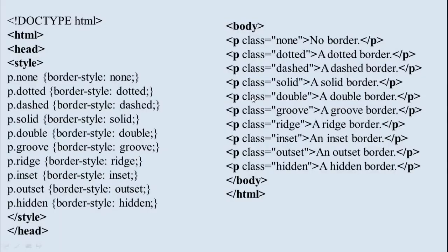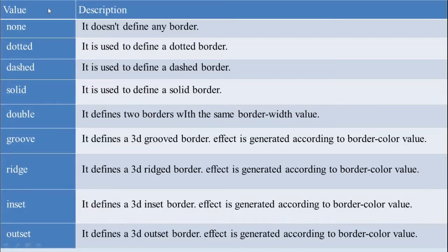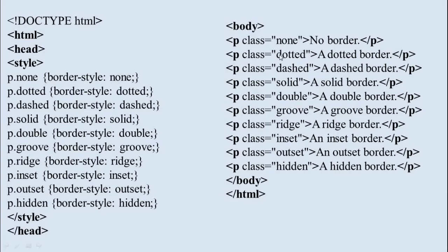We have nine properties here. The values you can mention are: none, dotted, dashed, solid, double, groove, ridge, inset, outset, and hidden. For example, none means no border, dotted means a dotted border with border-style set to dotted. In this way you can understand the different border style values from the table.